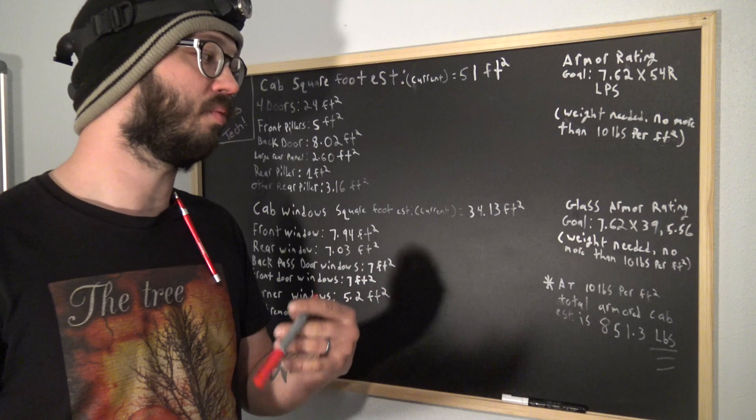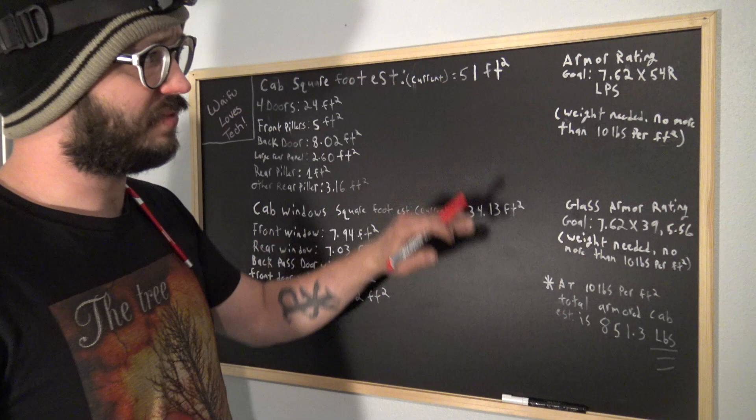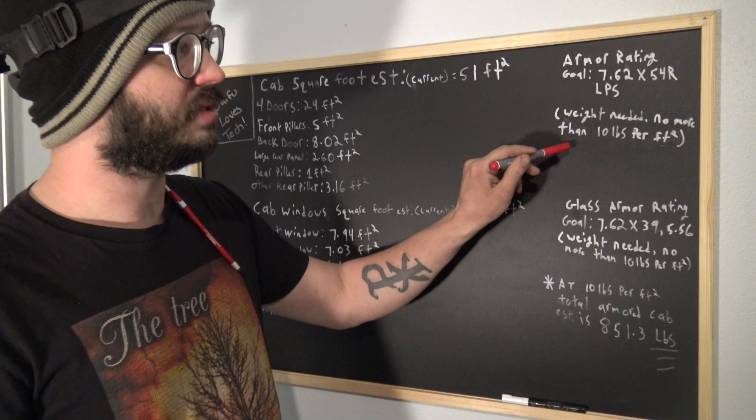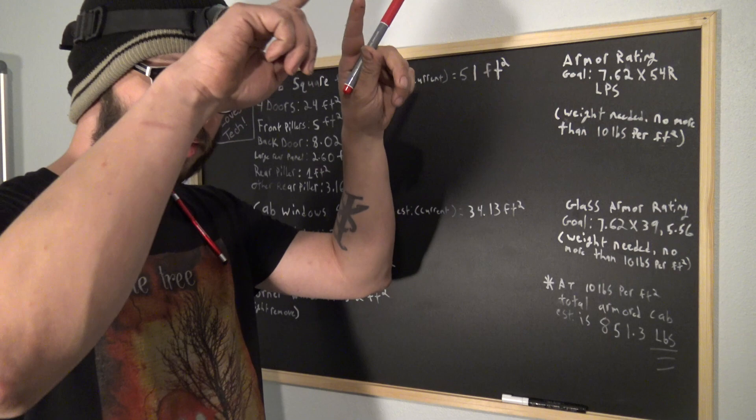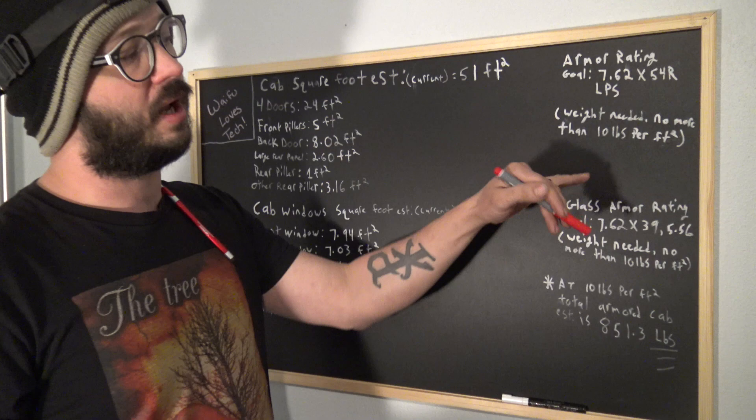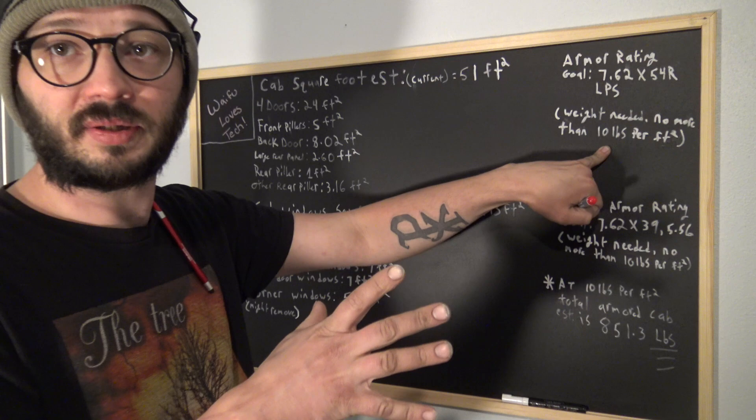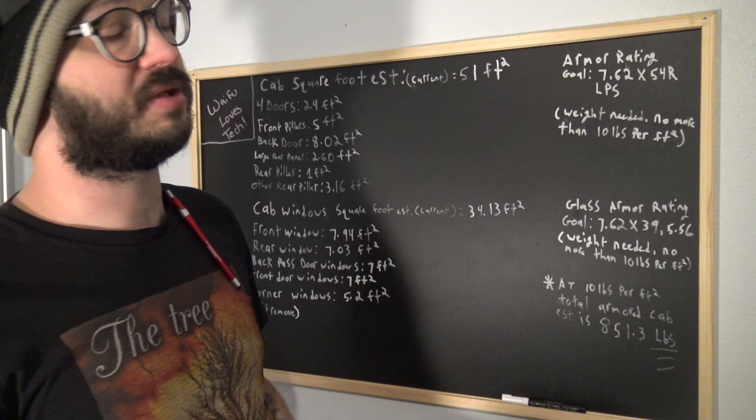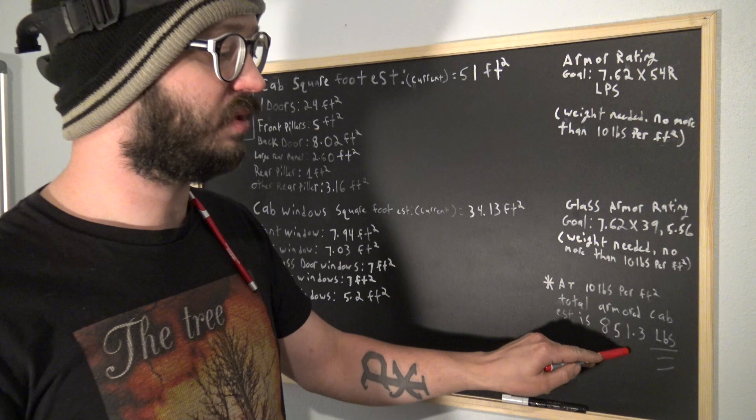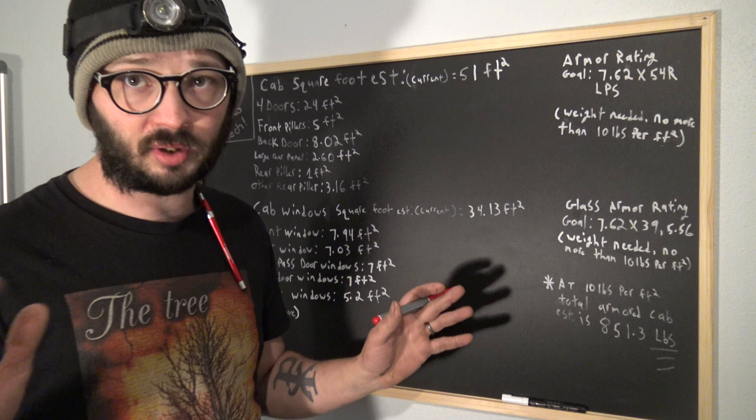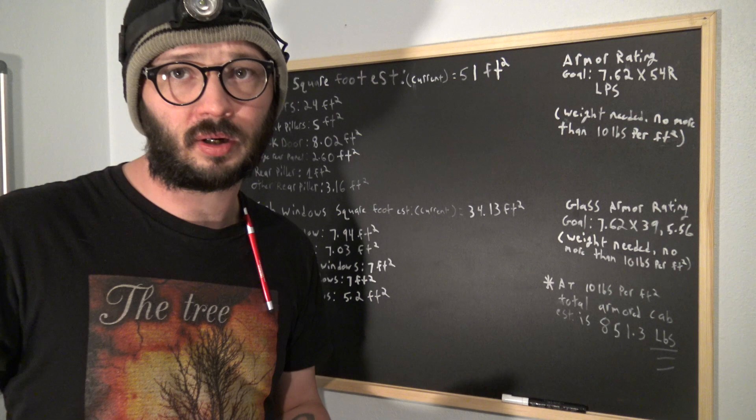Now, that we have these, and we have our armor ratings that we want to do, we start plugging in the numbers of how much weight I've managed to accomplish on armor previously. Like, 10 pounds per square foot, which, if you watch my last video on this topic of the armor for the Jeep, I got two plates that were really close to this. Some of them were over this limit. So, we need it no more than 10 pounds per square foot based off that. And if both the panels and the glass, the bulletproof glass, were 10 pounds, it would be 851.3 pounds for just the armor. And that's just the cab. Now, you can see why we have an issue with our gross vehicle weight allowance, our max payload. This is a big issue.